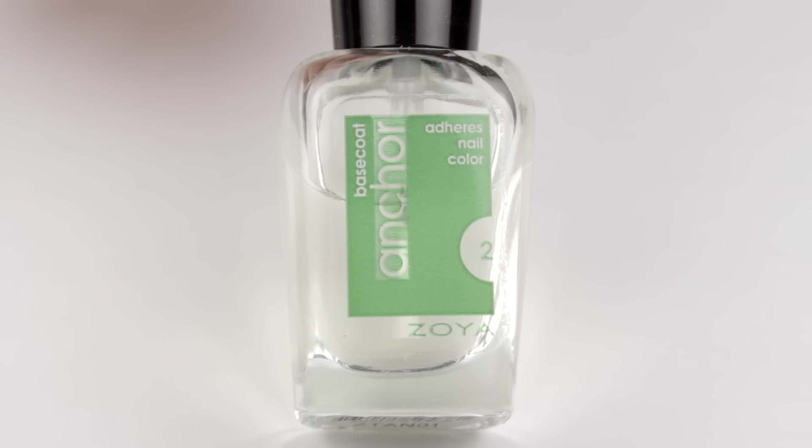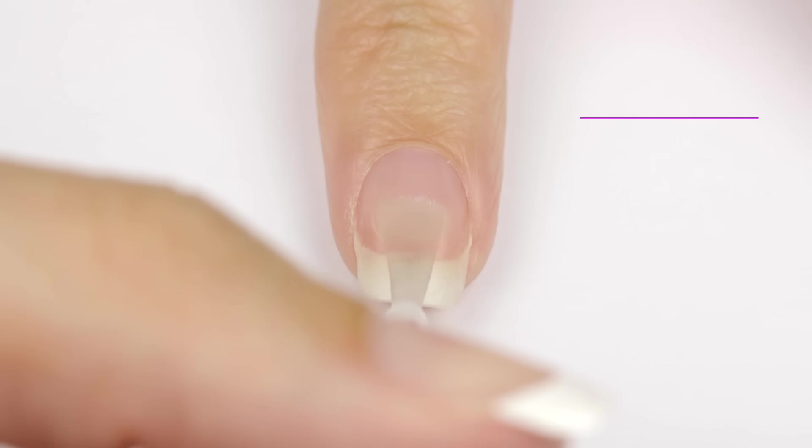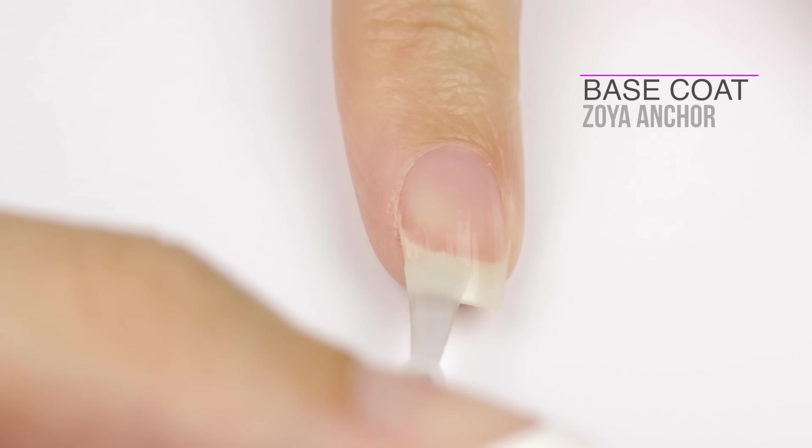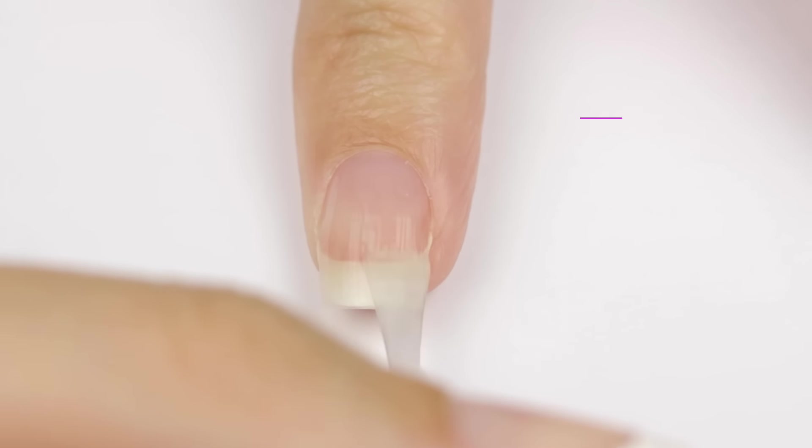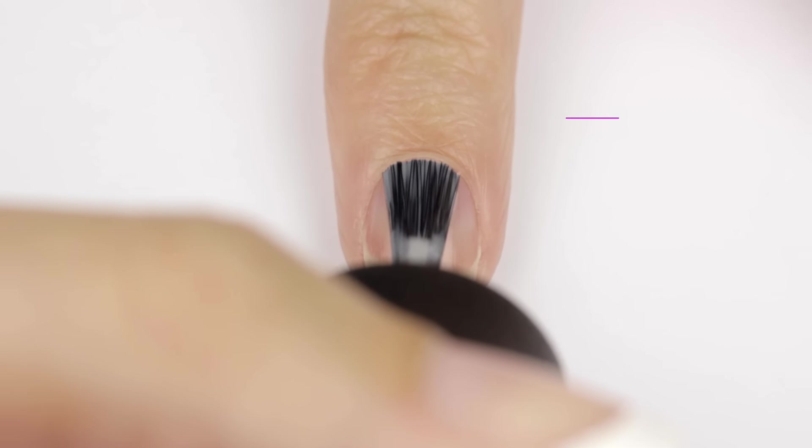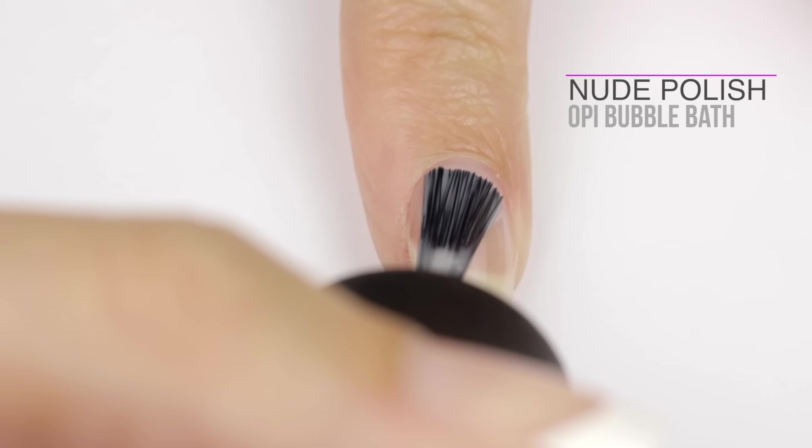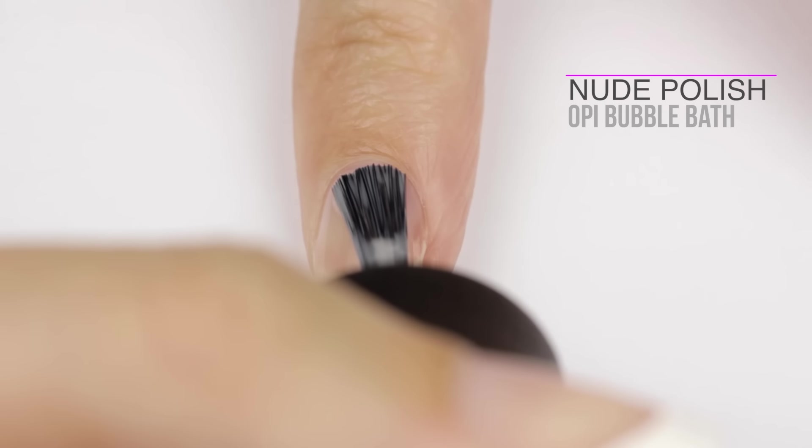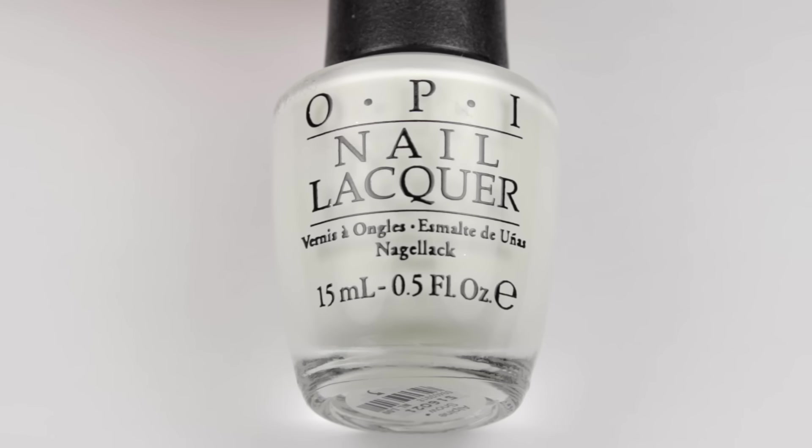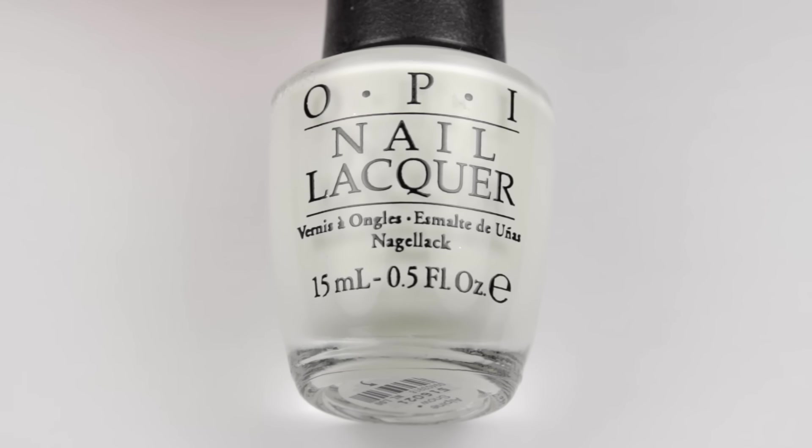Let's start with the most common way to create a French tip. Begin with a base coat to protect your natural nails. This will help to keep your French mani lasting all week. Then apply a coat of a sheer pink or beige polish for your base. This will enhance and even out the color of your nail bed. Now choose a bright white polish.